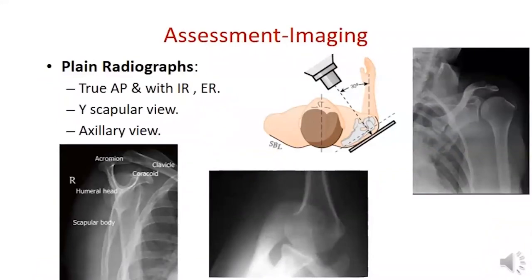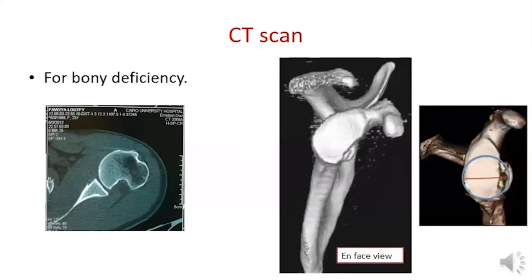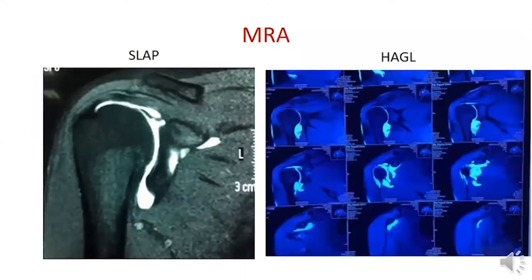Imaging should include plain X-rays: true AP, AP with internal and external rotation for Hill-Sachs lesion, Y-scapular view, and axillary view. Special views for bony deficiency include the West Point view for glenoid bone loss and Stryker notch view for Hill-Sachs. CT scan is important for bony deficiency with 3D reconstruction and digital subtraction of the humeral head. MRI is best for soft tissue, including Bankart tears, rotator cuff tears, labral lesions, and HAGL lesions.